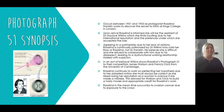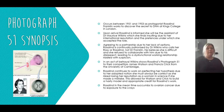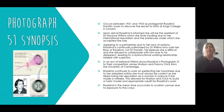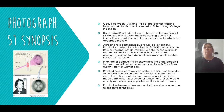You should by now have a good idea of the general synopsis of Photograph 51 — content knowledge in the SAC was pleasing with only a couple of mistakes. In quick recap: the text occurs between 1951 and 1953 as protagonist Rosalind Franklin works to discover the secret to DNA at King's College in London. Upon arrival, Rosalind is informed she will be the assistant of Dr Maurice Wilkins, which she finds insulting given her international reputation and the pretenses under which she accepted the role. From the very start, Ziegler sets up conflict around gender.